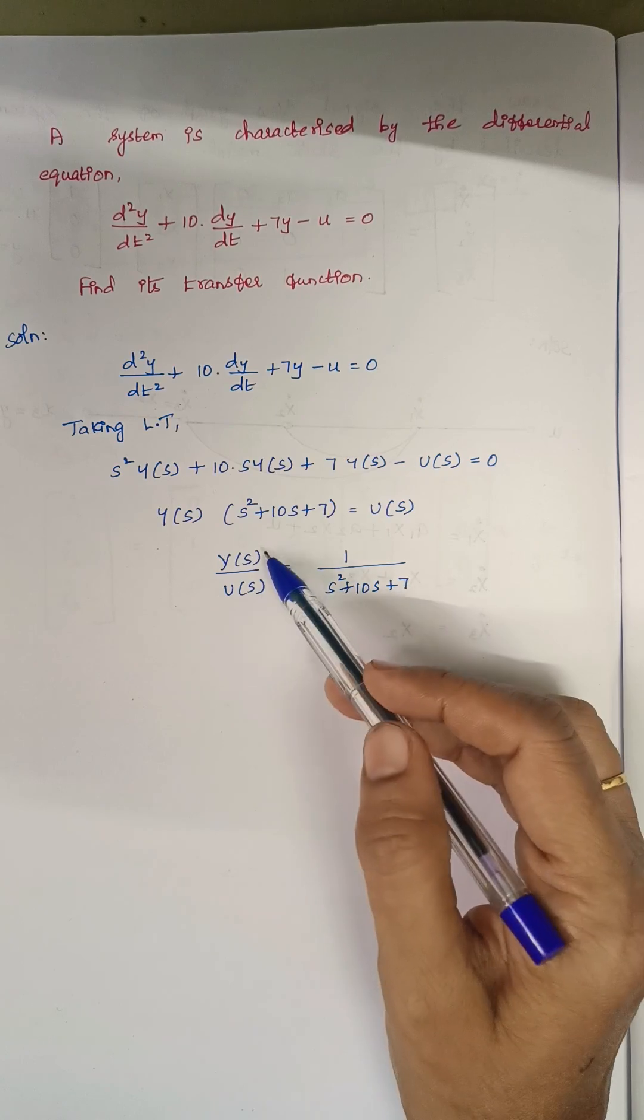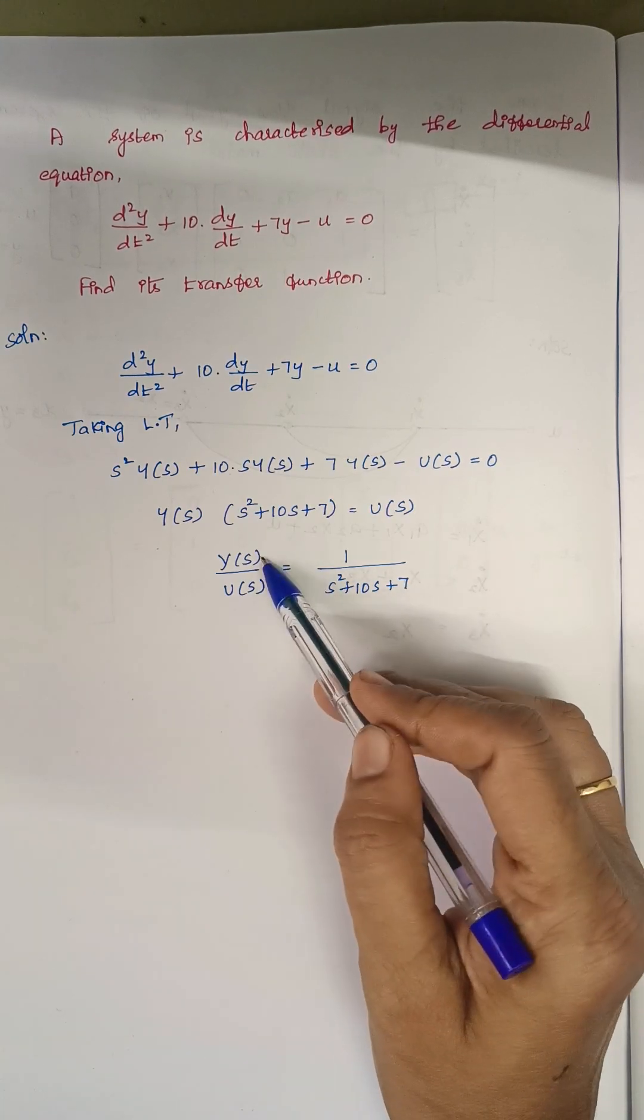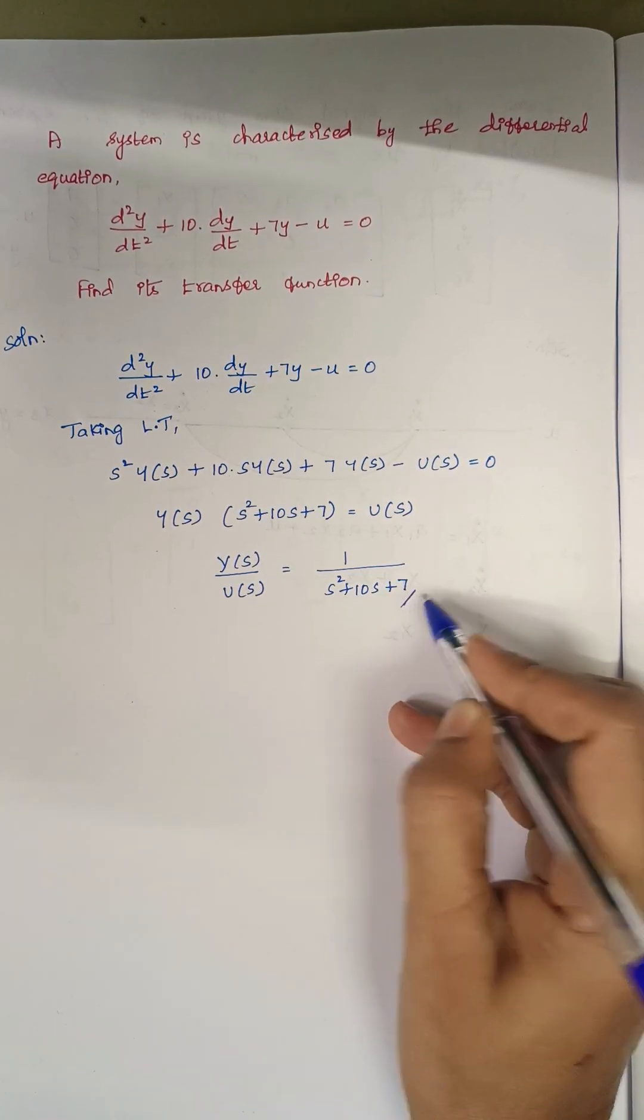Again, while rearranging y of s by u of s, because y of s is output, u of s is input, and this is the respective transfer function.